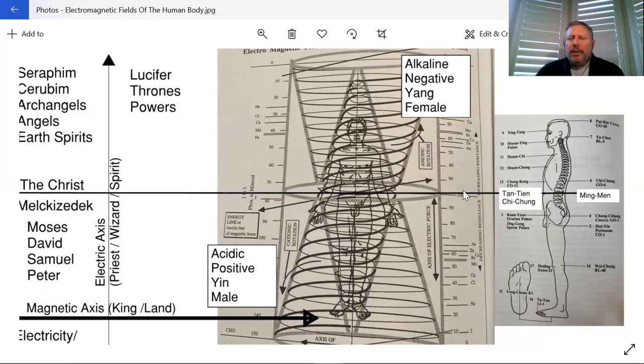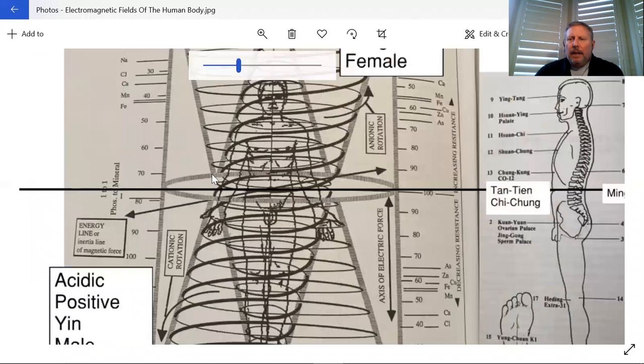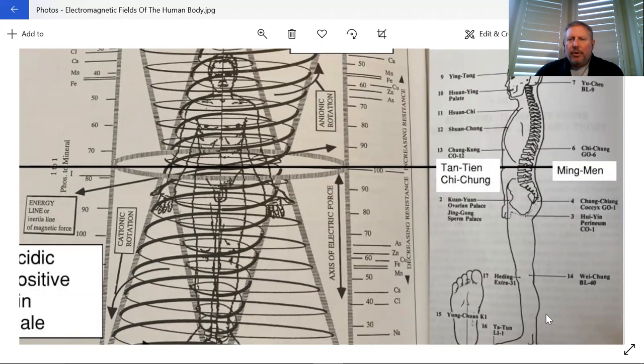As we look over here at this drawing, which comes from Mantak Chia's book showing these different points, I've aligned these drawings so we see that the humans have the same head and feet positions and this middle point runs through the middle of this diagram.